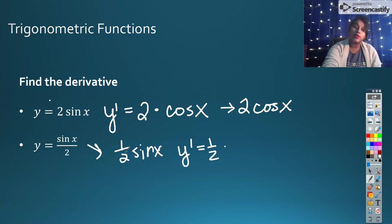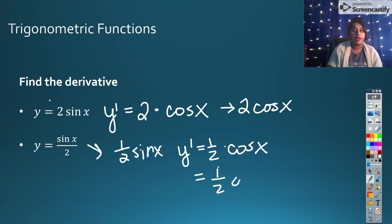y equals sine x over 2, we modified that and brought that 1 half out so that you can actually see it as 1 half times sine x. So its derivative would simply look like y prime is equal to 1 half times the derivative of sine x, which is cosine x. So you can simplify that down to 1 half cosine x or, of course, cosine x over 2.